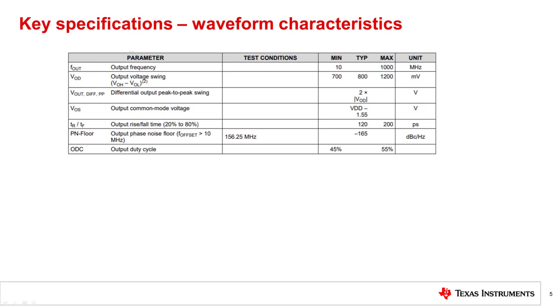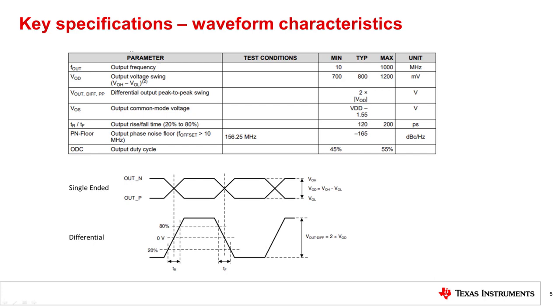The output swing is specified both single-ended and differential. Rise and fall time are measured in picoseconds from 20% to 80% of the differential swing. Note that proper termination, as described in the datasheet, is necessary to meet swing, common mode voltage, and timing specs. CMOS or other single-ended oscillators will have similar tables, just specified for a single-ended rather than differential.